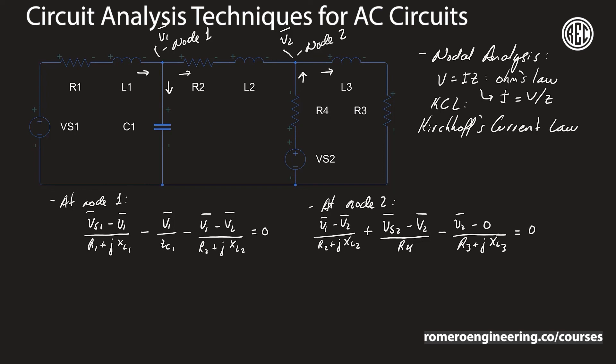These are two different techniques — loop analysis and nodal analysis — that we can use to solve complex AC circuits. They are very similar to DC circuit analysis; it's the same technique, except that instead of using only resistances, we now use impedances. The analysis is the same; it's just that we're dealing with impedances instead of just resistances. Over the next couple of lectures, we'll solve these two circuits using real values for the resistances, impedances, current sources, and voltage sources.